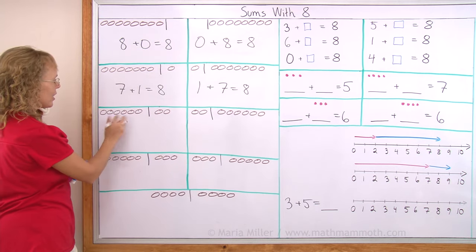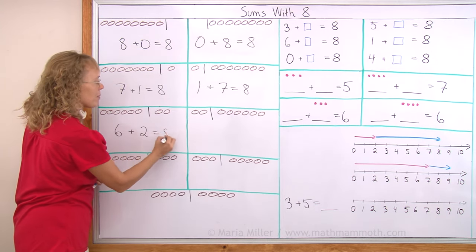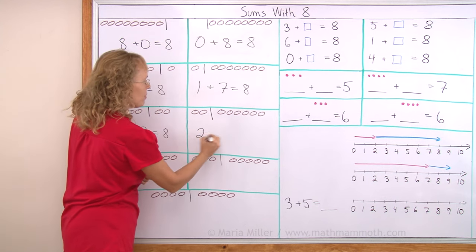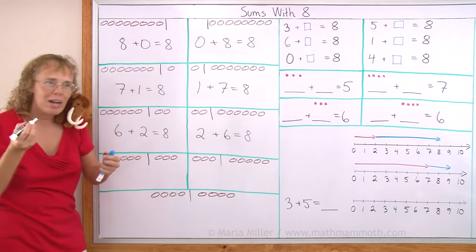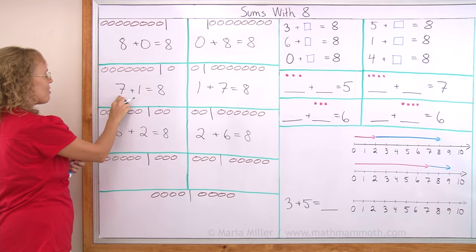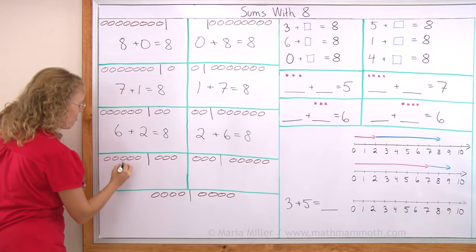And then here, 6 and 2 makes 8. And 2 and 6 makes 8. Now notice there is a pattern here. I started with 8, then 7, then 6 and over here I have 5.